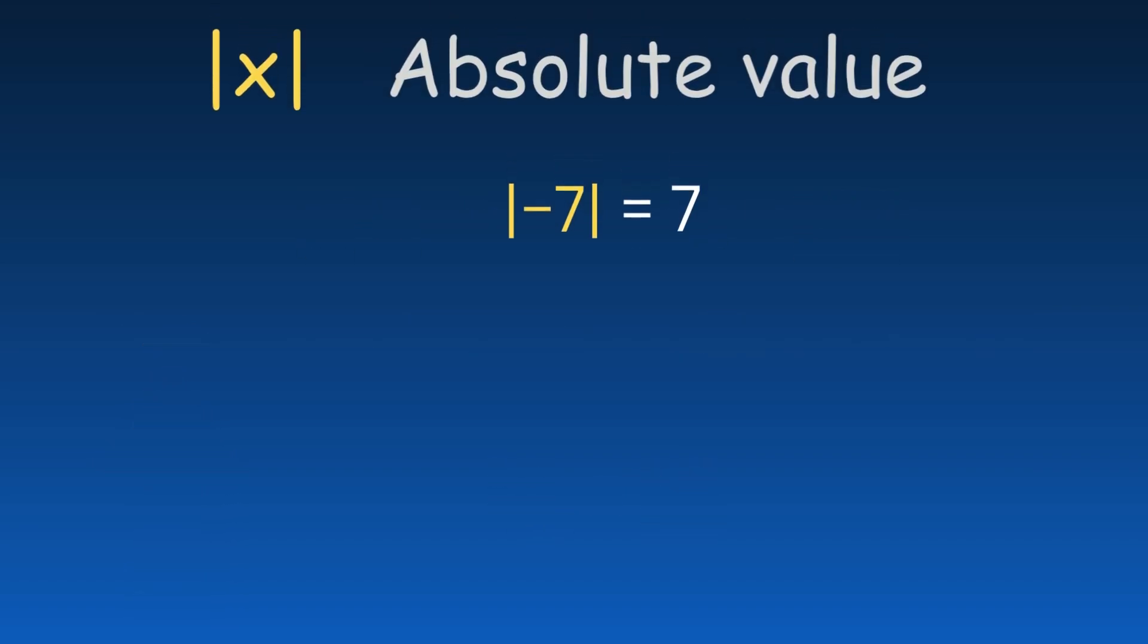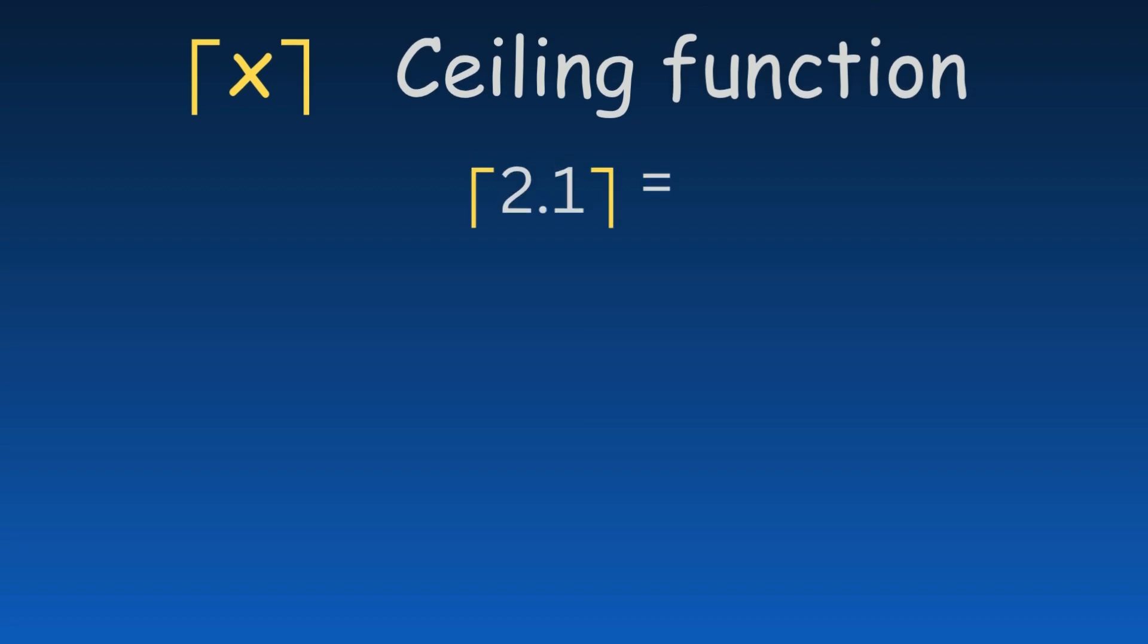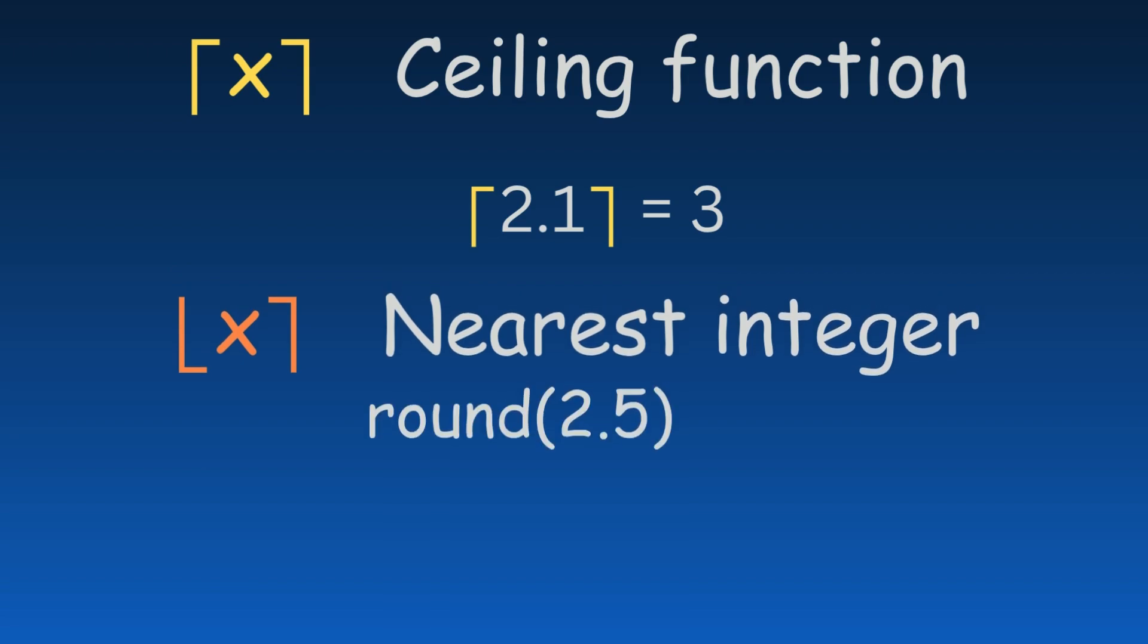The absolute value of a number represents its distance from zero on the number line. The floor function gives the greatest integer less than or equal to a value, while the ceiling function returns the smallest integer greater than or equal to it. The nearest integer function does just what it says, rounds to the closest whole number.